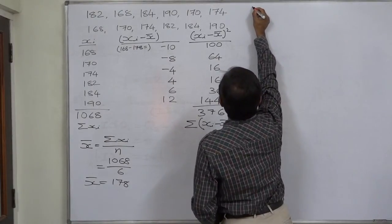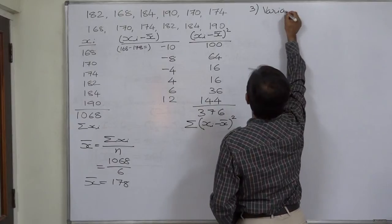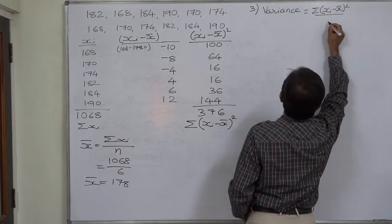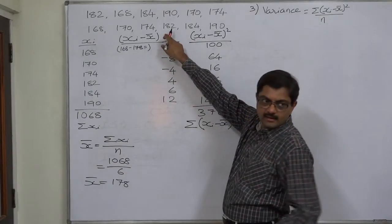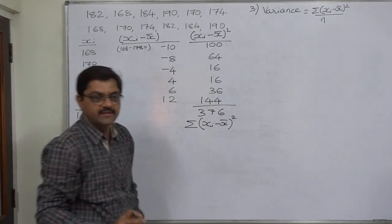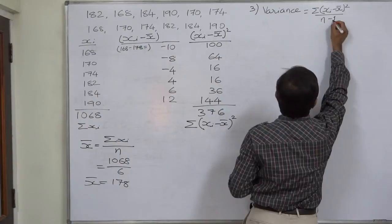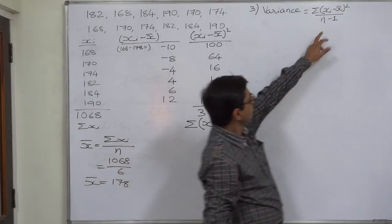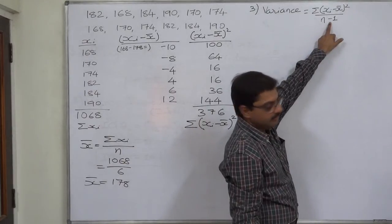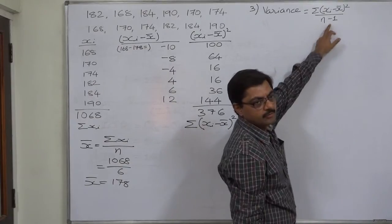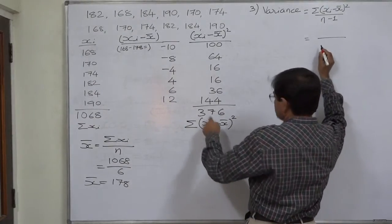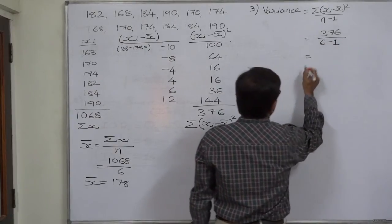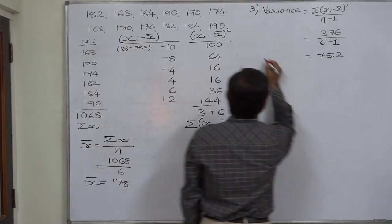Variance equals sigma (x − x̄)² divided by (n − 1). Since this is sample data, we use n − 1 as the denominator. If we calculate variance for the population we substitute N only, but for sample data we subtract 1 from n. So variance = 376 / (6 − 1) = 376 / 5 = 75.2. That is the variance of this data.